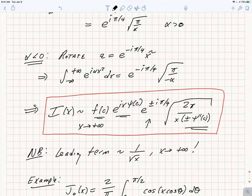Notice, just like in the case of Laplace's method, the leading term, other than the exponential factor, goes like 1 over the square root of x, not like a power of x.